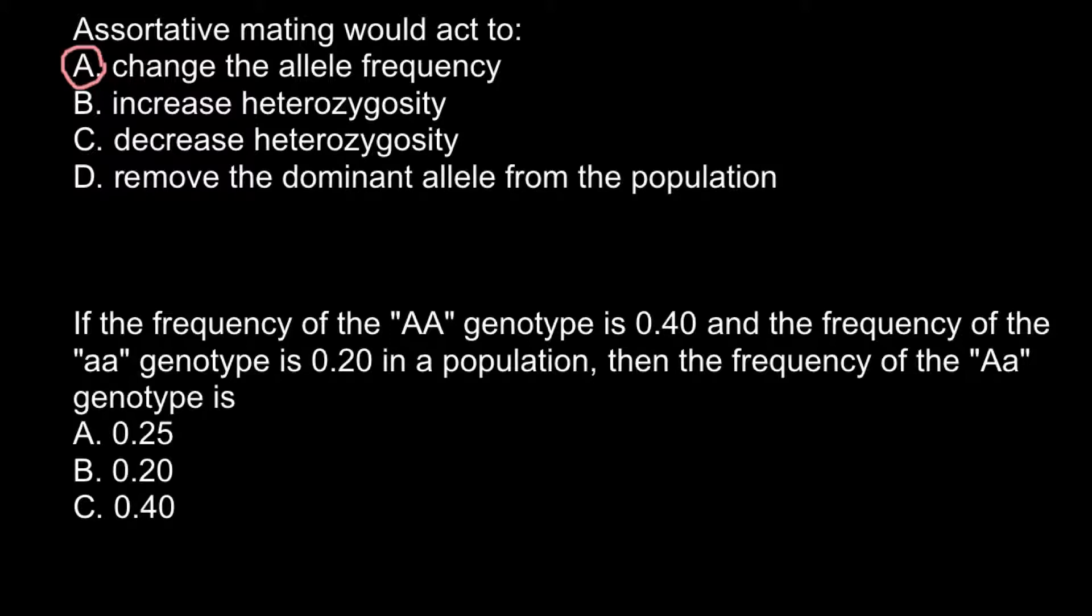let me remind you of the Hardy-Weinberg formula. The frequency of the three genotypes that is possible when we have two alleles can be expressed as p squared plus 2pq plus q squared. And all this equals to 1.